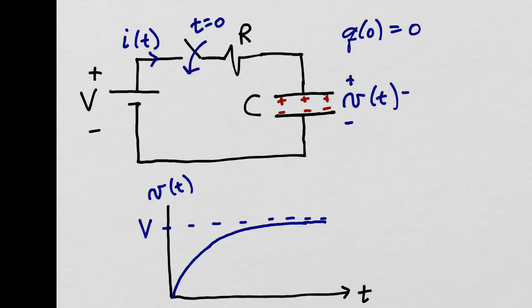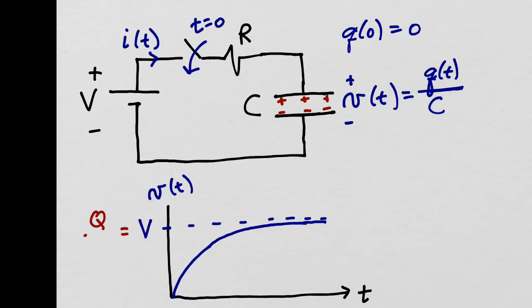The voltage across the capacitor will be the charge on the capacitor divided by the value of the capacitance. So the voltage across the capacitor will start at zero and build up to the value of our DC power supply. The final charge on the capacitor divided by the value of the capacitance will equal the value of our DC power supply.